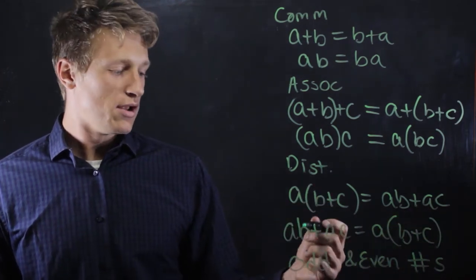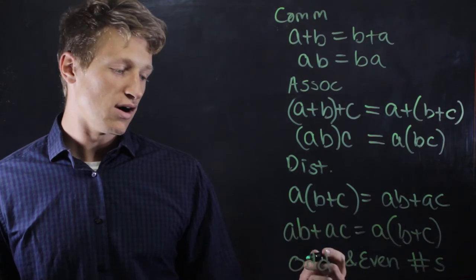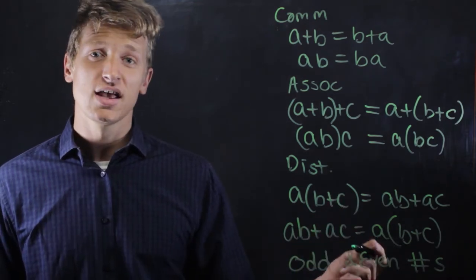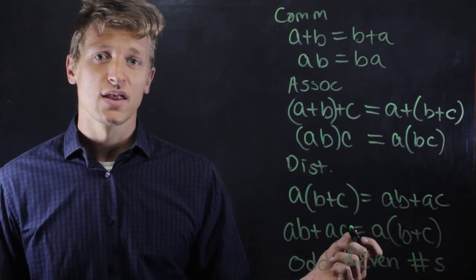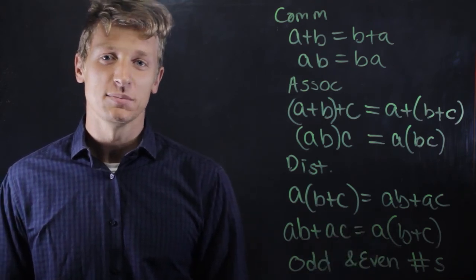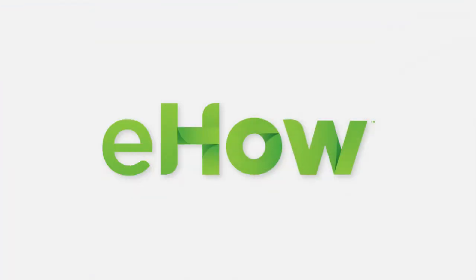Properties also extend to numbers. A number is odd if it's not divisible by two and it is even if it is divisible by two. So I am Tyler Locke and this has been What Does the Property Mean in Math?